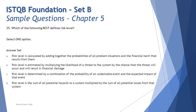Option C says: risk level is determined by the combination of the probability of an undesirable event and the expected impact of that event. This looks quite general — we are not talking about any one specific example of likelihood or impact. We are saying it is a combination of the probability of an undesirable event and the expected impact, which can be one or multiple factors.